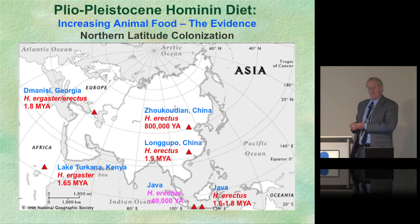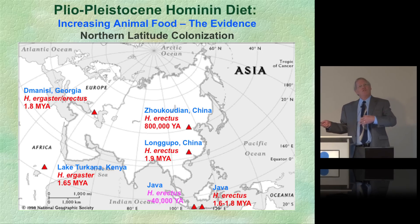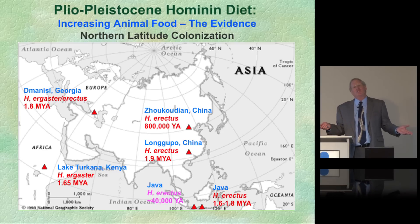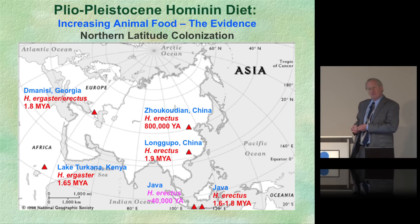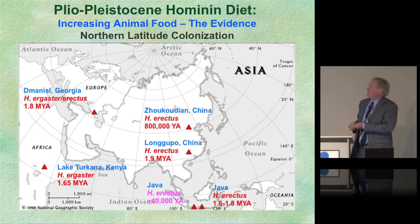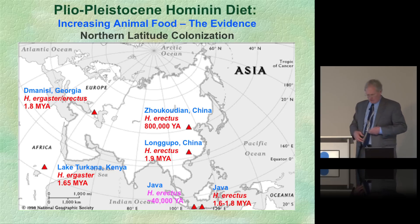At 40 degrees north latitude — where I live in Colorado — the ground is still frozen and there's no plant food available for foraging. So animal food had to have been a major source of diet. The behavioral adaptation to hunt or scavenge animal food had to have occurred at lower latitudes before we could have migrated there. Even during interglacial periods, you needed animal foods to live at these far northern latitudes.